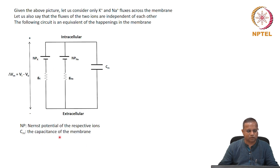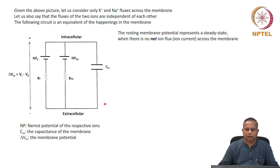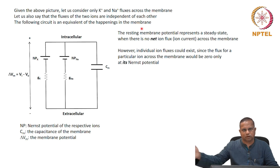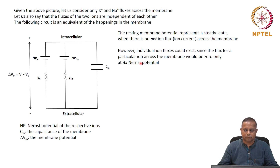NP is the Nernst potential of the respective ions and Cm is the capacitance of the membrane; ΔVm is the membrane potential. The resting membrane potential represents the steady state — when there is no net ion flux or ion current across the membrane. However, individual ion fluxes could exist because at resting membrane potential, the Nernst potentials may not equal the resting membrane potential. Each ion could move, since the flux for a particular ion across the membrane would be zero only at its Nernst potential.